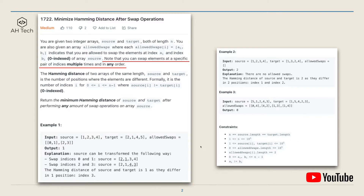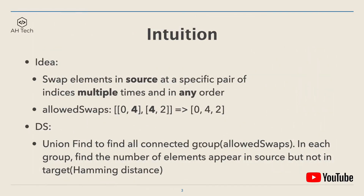The intuition to solve this question: there's an important clue that we're able to swap elements in the source array at a specific pair of indices multiple times, any number of times, and in any order.